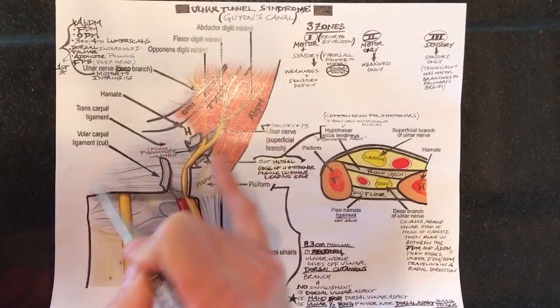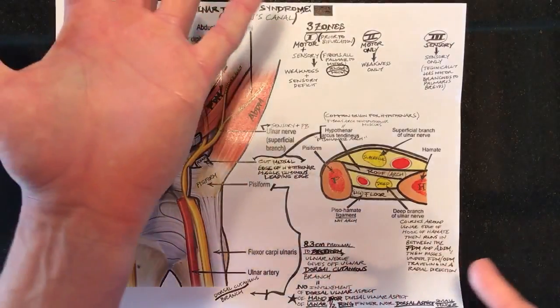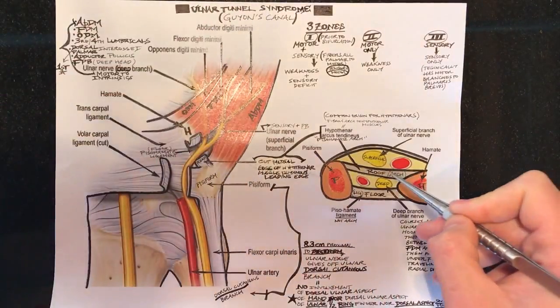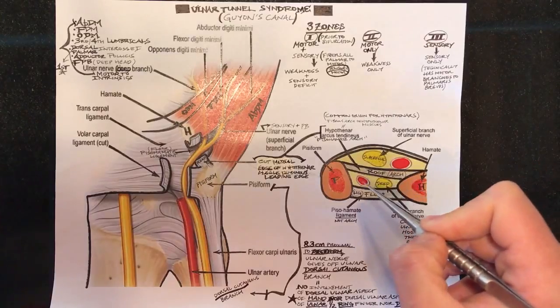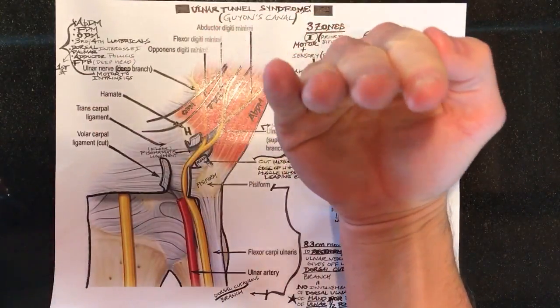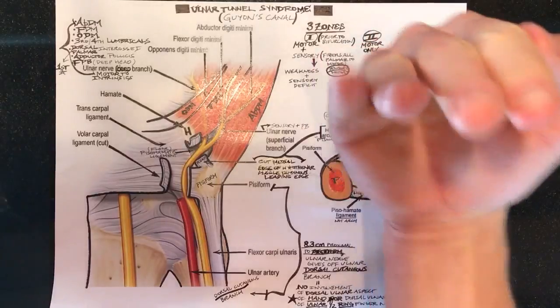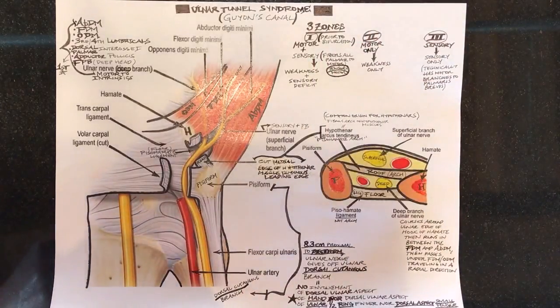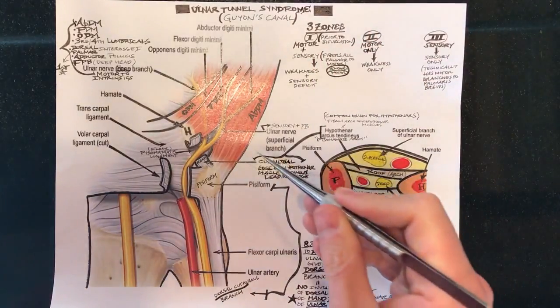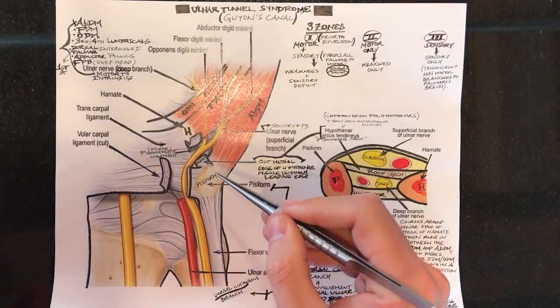So here I have a view of the hand like so, and this is an axial view of the hand looking straight through the tunnel like this.